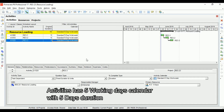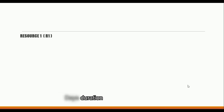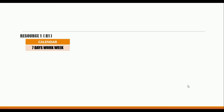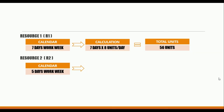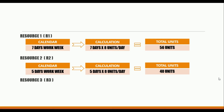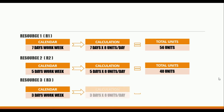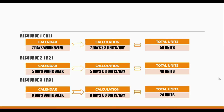Looking at the expected calculation: Resource One with a seven-day work week gives seven days times eight hours per day, which should equal 56 units. Resource Two with five days should give 40 units, and Resource Three with three working days should give 24 units.